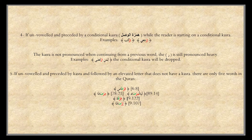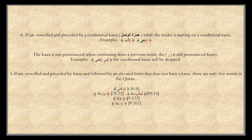Number four: if unvoweled and preceded by a conditional Kasra — Hamzat al-Wassl — while the reader is starting on that conditional Kasra, like Er-Rajah, Er-Rakab. The Hamzat al-Wassl conditional Kasra is dropped if we carry on from before; we will talk about it in detail later. For example, Lima' Neer-Rakab — if we carry on from the word before, we cancel the Hamzat al-Wassl.